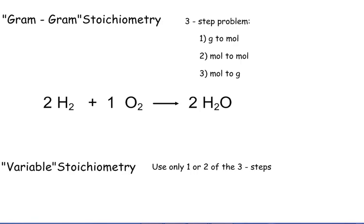In gram-gram stoichiometry, these have been three-step problems. The first fraction of the three steps helped you convert a mass in grams to moles of that substance. So that first fraction took grams of a substance to moles of that substance, where you had one mole over some number of grams that came from the periodic table.